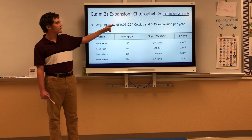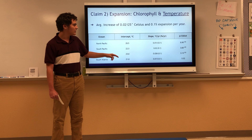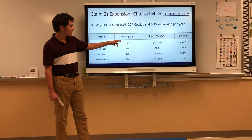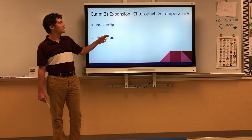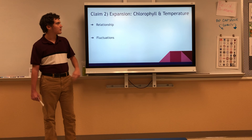It also shows the expansion of temperature, which is increasing by 0.02125 degrees Celsius and a 0.1 percent expansion per year. Based on the graph's slope and intercepts, it shows the relationship between chlorophyll and temperature, and how the fluctuations between both demonstrate that ocean deserts cannot sustain life.